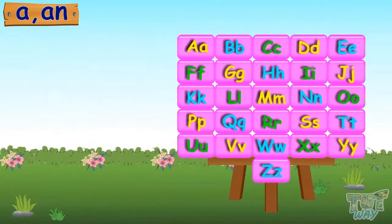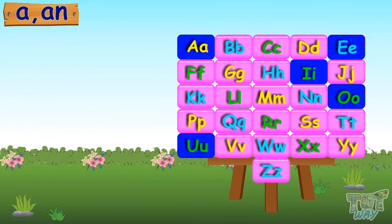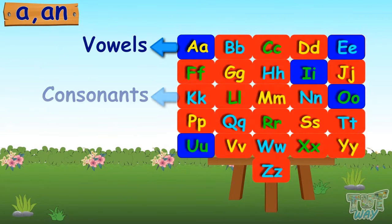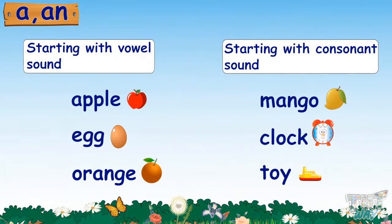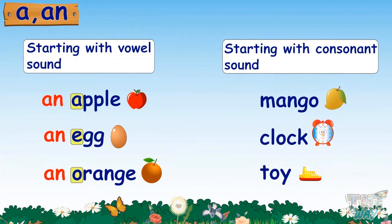We have 26 letters in English. Out of them, only 5 letters are vowels and the rest are consonants. The rule is: when a singular naming word begins with the sound of any of the vowels, then we use 'an' before it. And when a singular naming word begins with the sound of any of the consonants, we use 'a' before it.